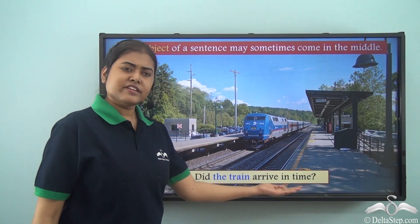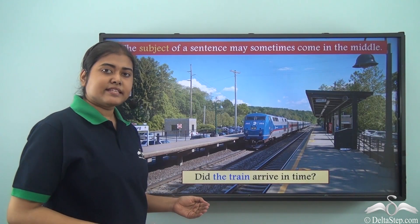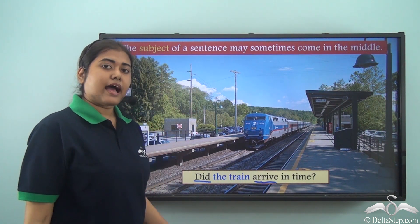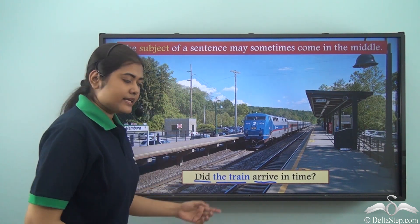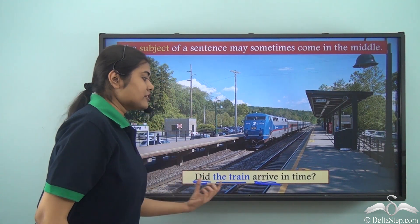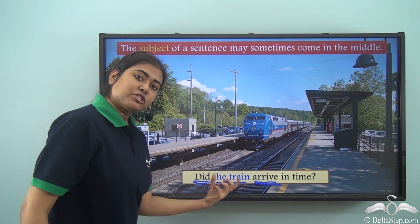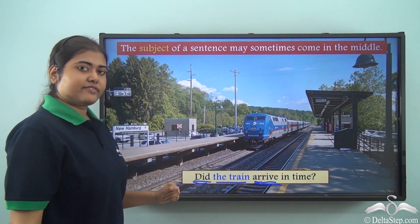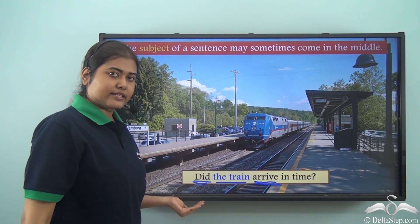'Did the train arrive in time?' This is a question and the verb is 'did arrive.' Where is the subject? The subject, 'the train,' is placed between 'did' and 'arrive' — the two parts of the verb. So the subject is placed between the two parts of the verb, and in this case the subject is in the middle, not at the beginning of the sentence.